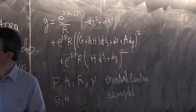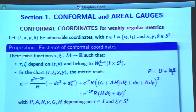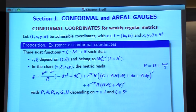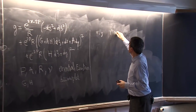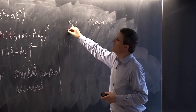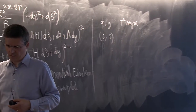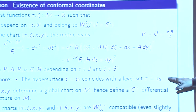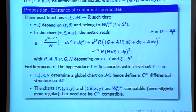The first proposition is the existence of such coordinates when starting from admissible coordinates, which give global coordinates on the spacetime. The coordinates x and y are adapted to the T2 symmetry and describe the T2 orbits. The quotient spacetime can be parametrized by τ and ξ in these conformal coordinates, such that the initial hypersurface t = t₀ in admissible coordinates coincides with τ = τ₀ in conformal coordinates.